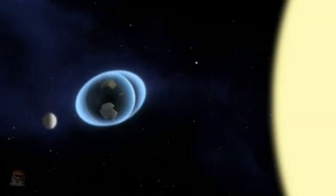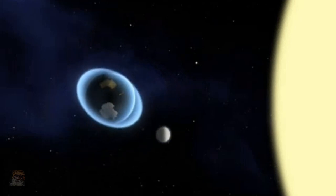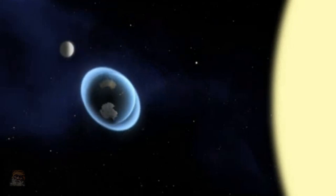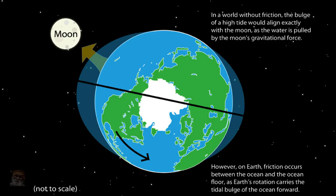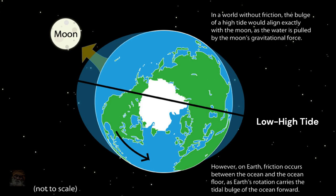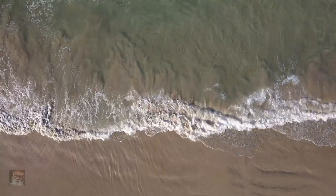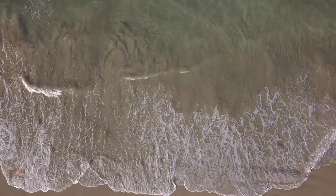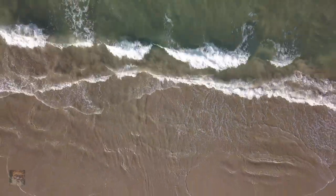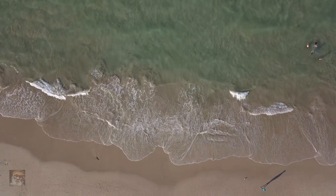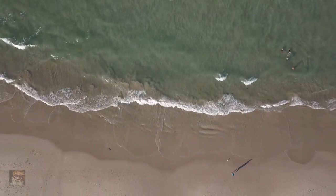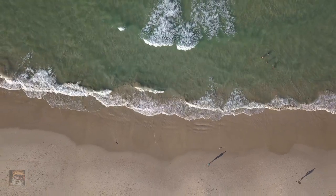The bulge on the opposite side may be understood as the moon's tidal force pulling the planet towards it. These bulges in the ocean waters are known as high tides. The high tide on the side of the earth facing the moon is called the high high tide. The high tide caused by the bulge on the opposite side of the earth is called the low high tide. In the open ocean, the water bulges out towards the moon; along the seashore, the water rises and is sprayed onto the land. One high tide always faces the moon while the other faces away from it. Between these high tides are areas of lower water levels, or low tides.